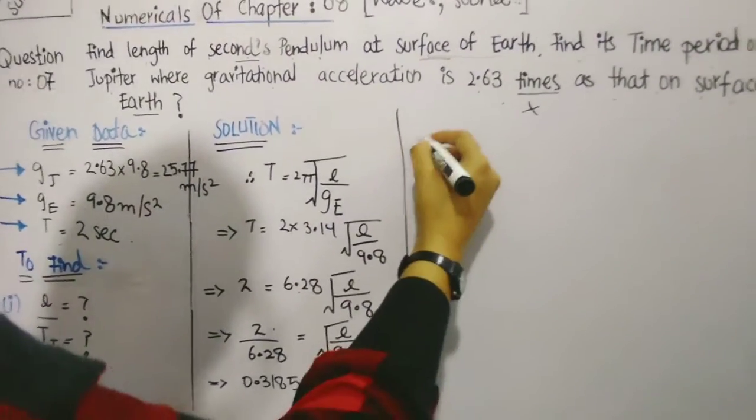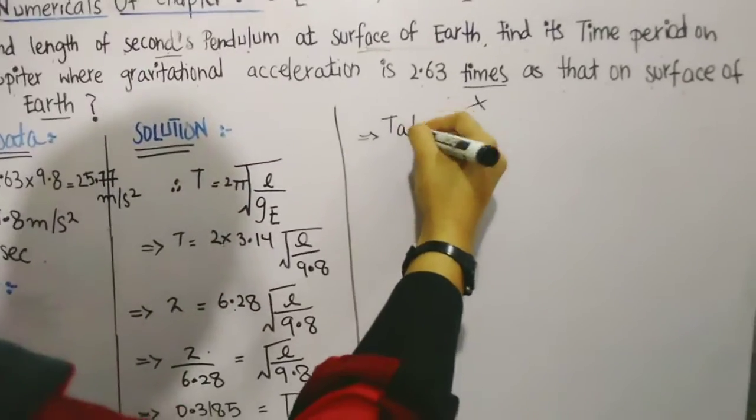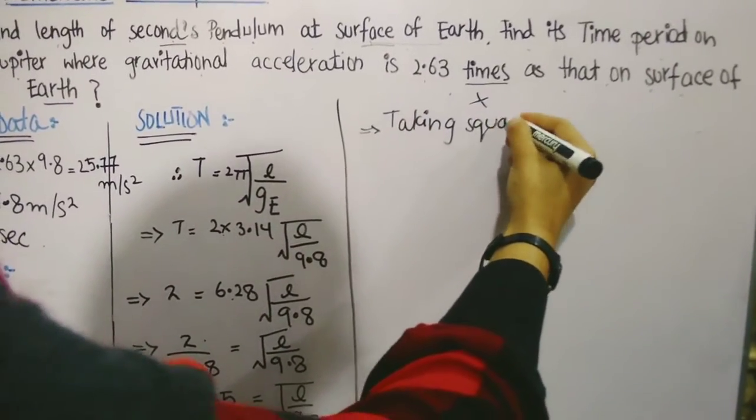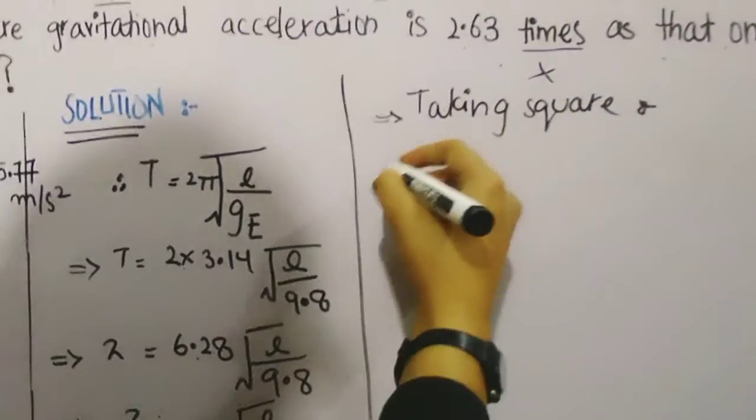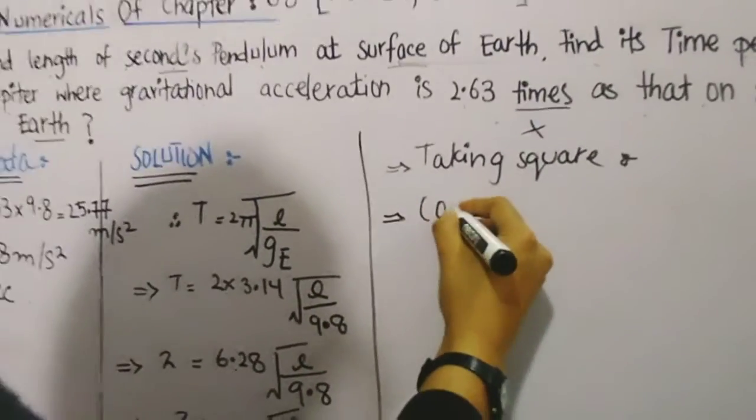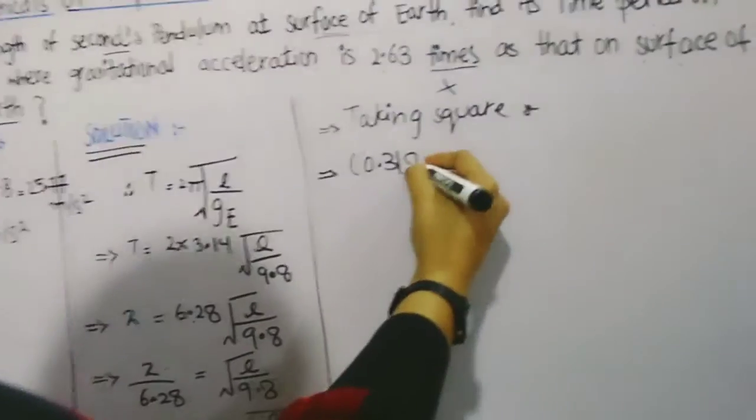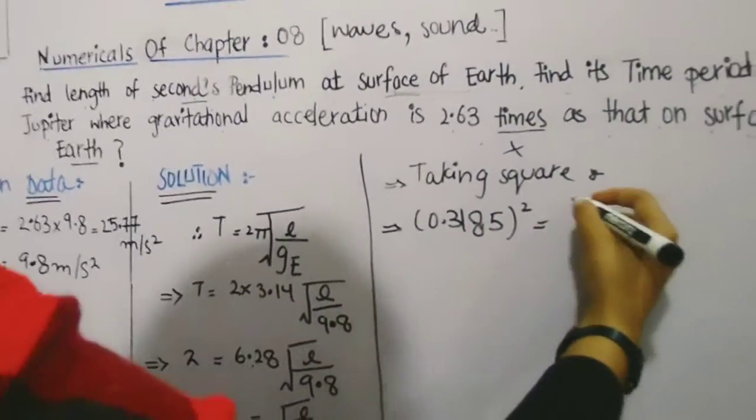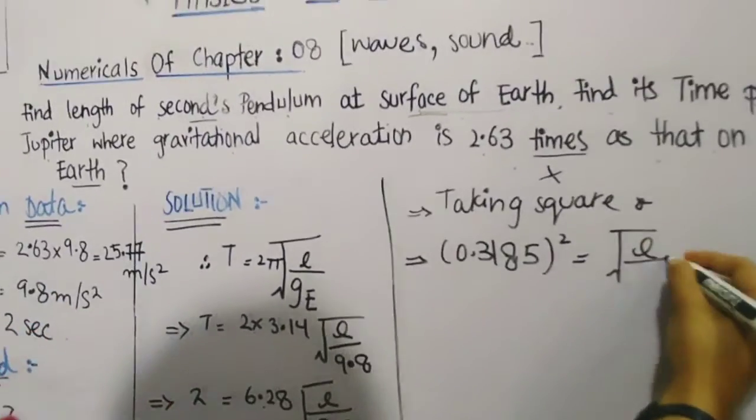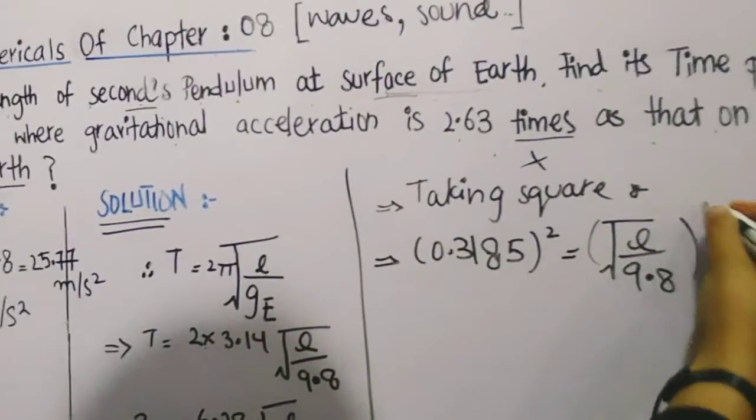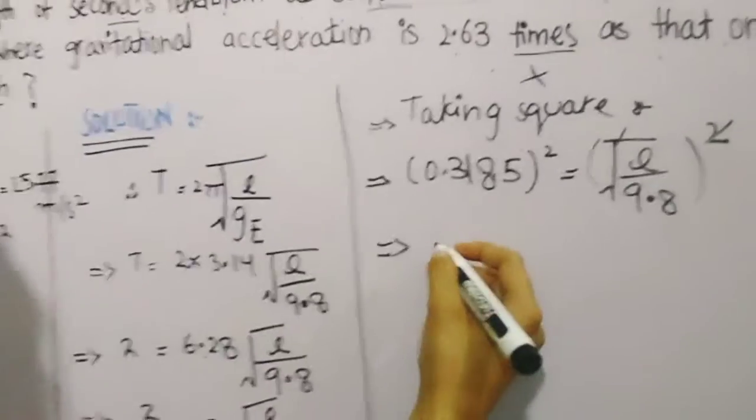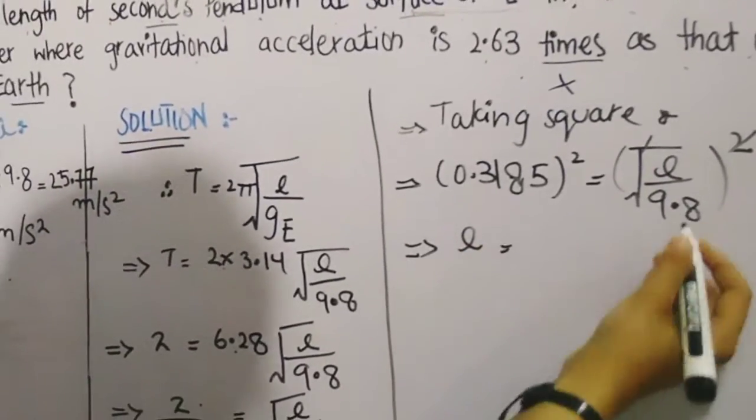So we have to remove the square. Taking square on both sides: (0.3185)² = L/9.8. So we remove the root, then it becomes 0.3185 squared equals L upon 9.8.